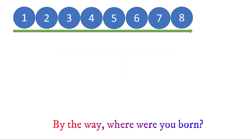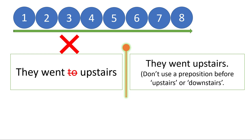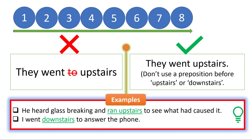Let's move on to number eight. 'They went to upstairs' — the problem is with the preposition 'to.' You should not use 'to' or 'from' or any preposition before 'upstairs' or 'downstairs.' Say: 'They went upstairs,' 'They are upstairs,' 'They were upstairs.' For example: 'He heard glass breaking and ran upstairs to see what had caused it' — don't say 'ran to upstairs.'